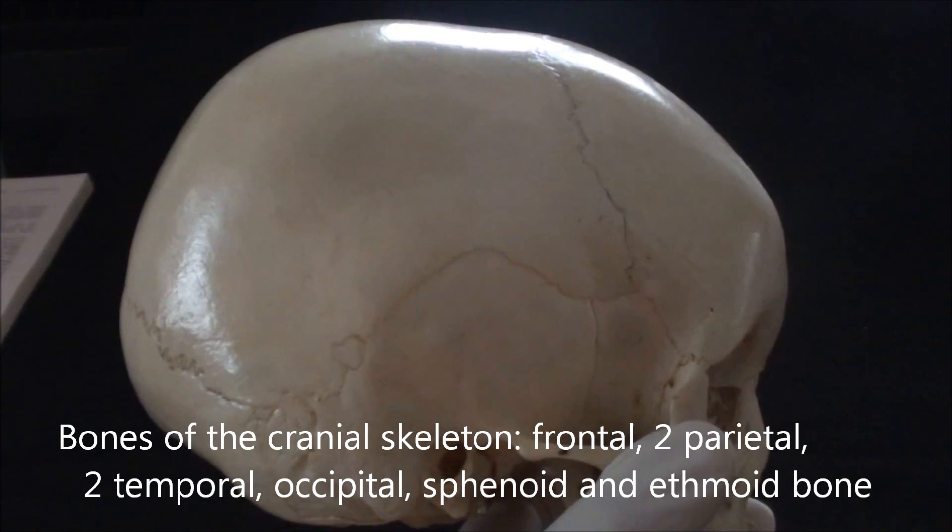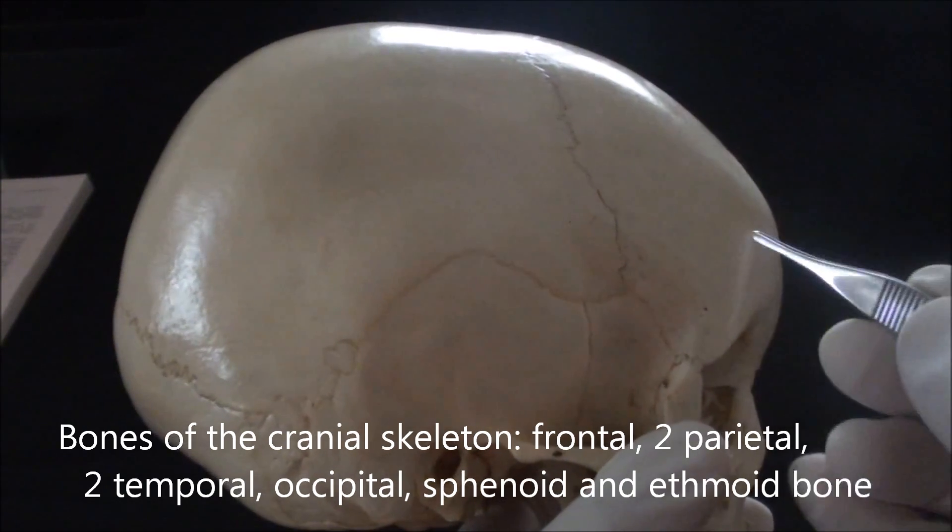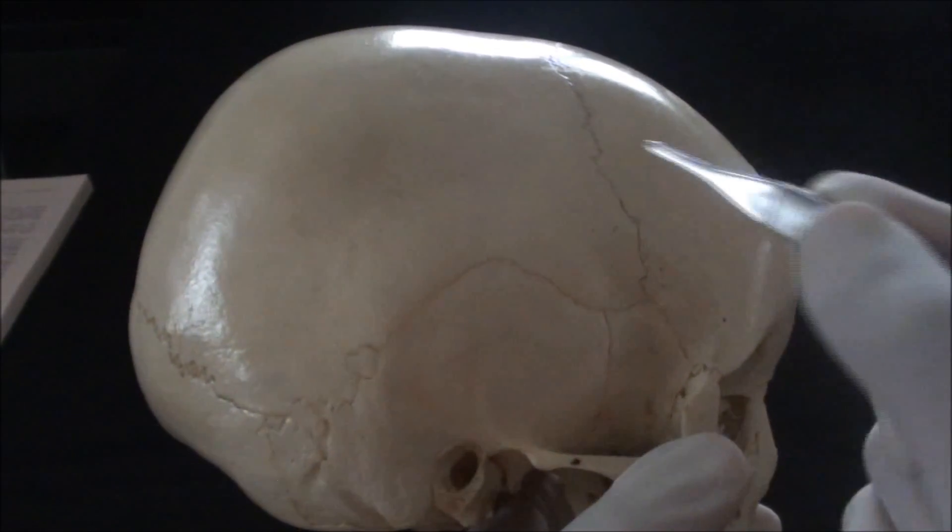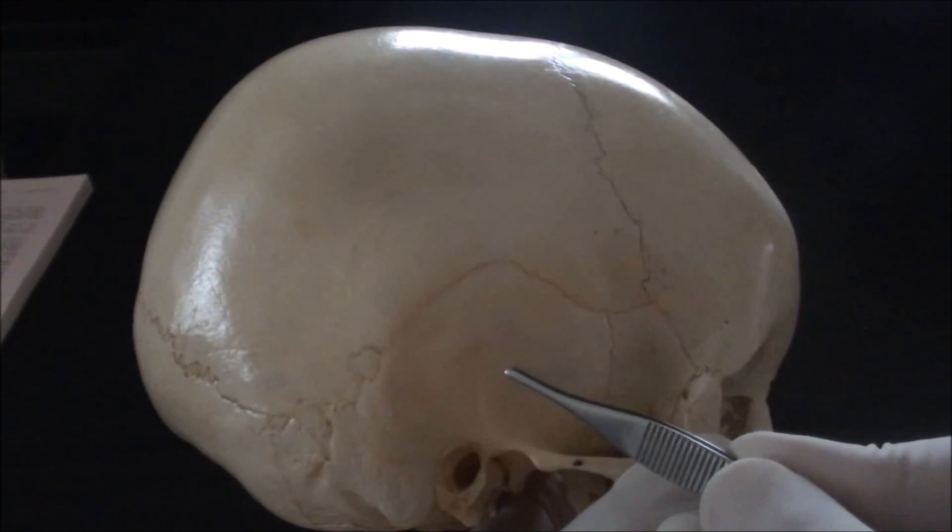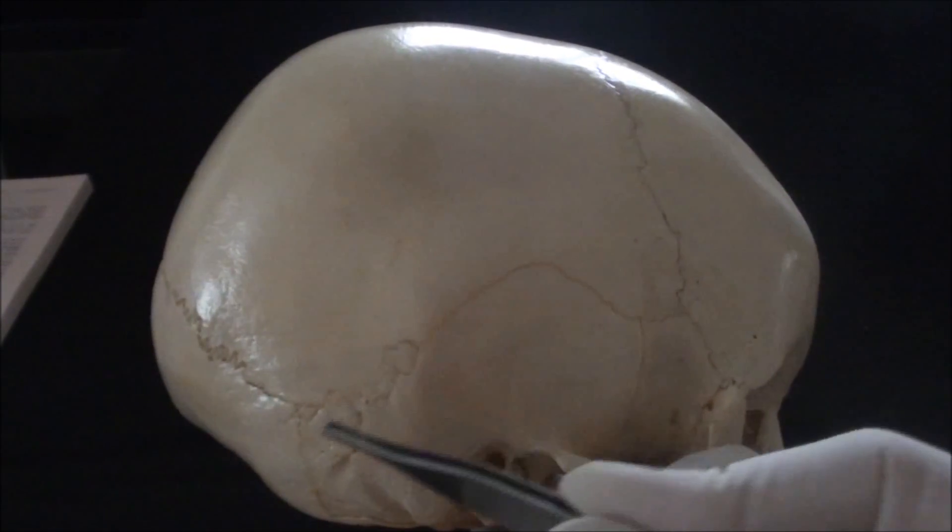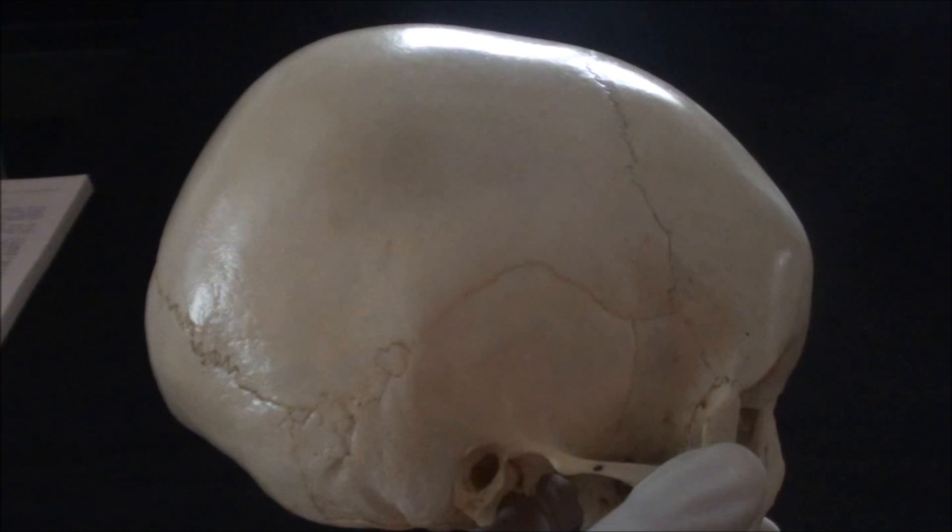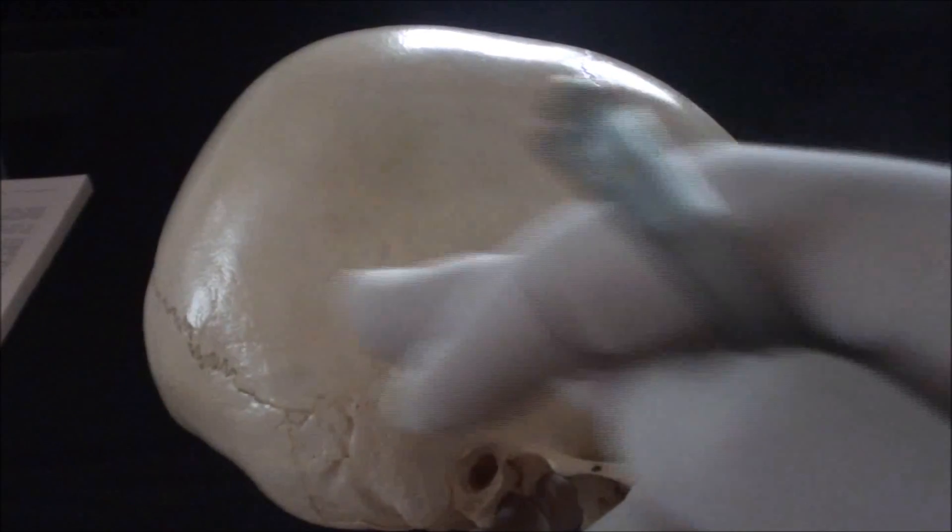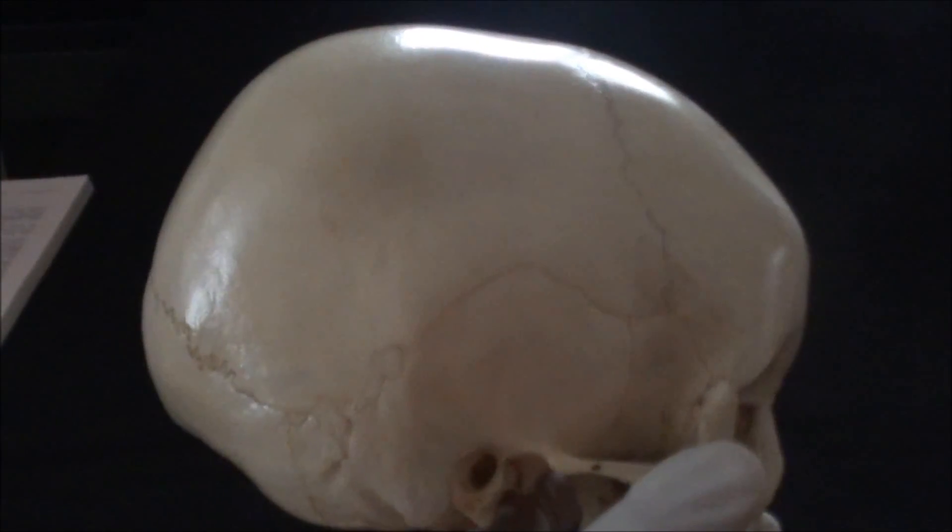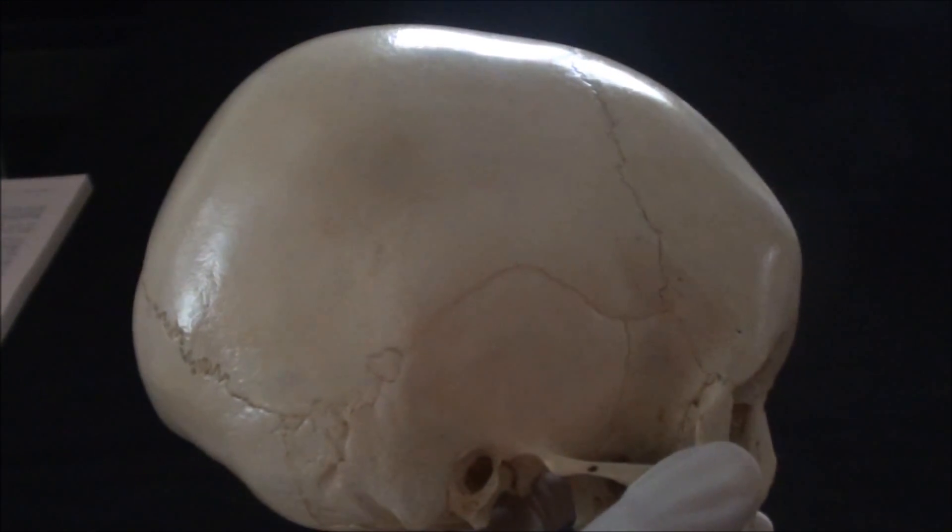The cranium is composed of six bones that are externally visible. Going from front to back, the frontal bone, then we would have left and right sided parietal bone, left and right sided temporal bone, and of course at the very back, the occipital bone. Other two bones that could be seen only when we take a look at the base of the skull, when the skull cap becomes removed, are the sphenoid and the ethmoid bone.